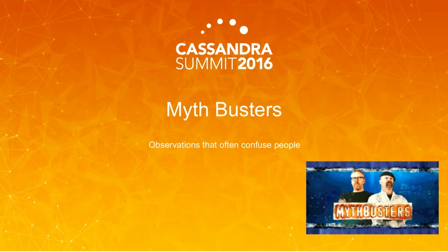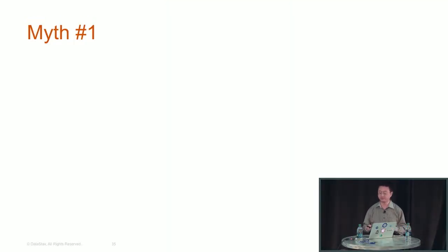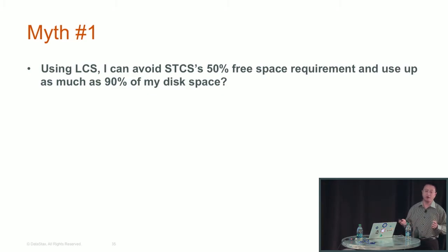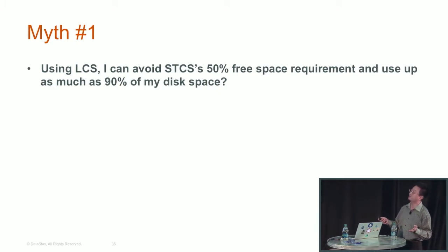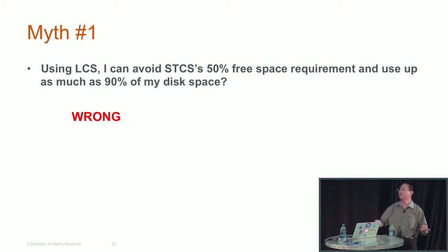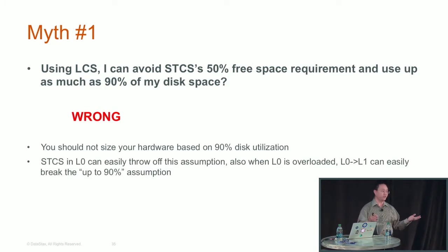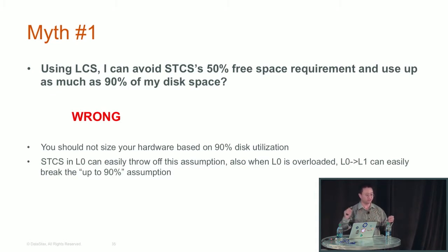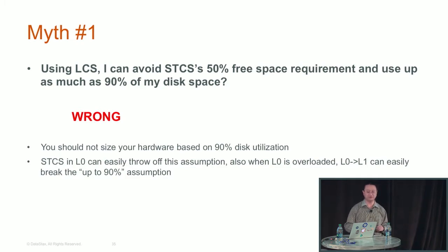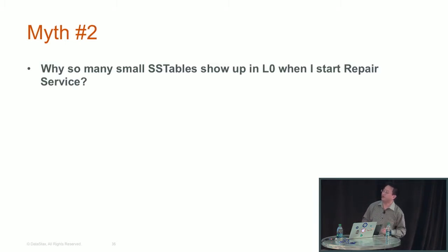Now for Mythbusters. Myth one: using Level Compaction can avoid STCS's 50% free space requirement and use up to 90% of disk space. That's wrong. If you overwhelm Level 0, you're back to STCS behavior at Level 0 and need just as much free space. During the green phase we saw — 100 GB input requires 100 GB free space for output. Don't assume that just because you choose LCS you can use far more of your available disk.